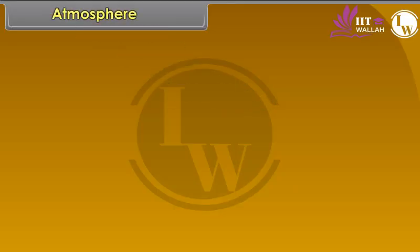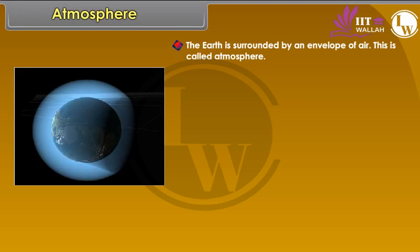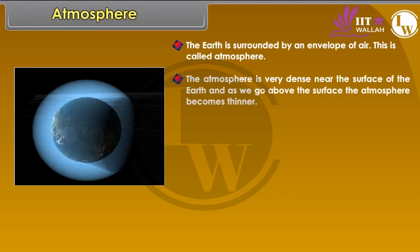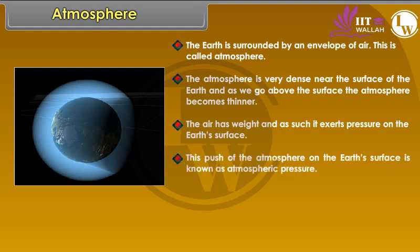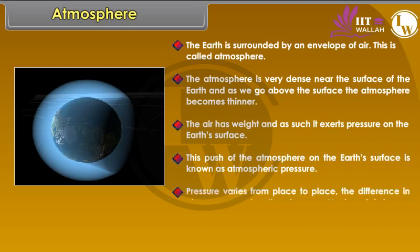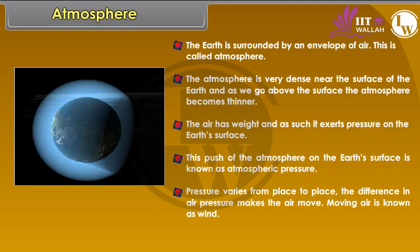The earth is surrounded by an envelope of air called the atmosphere. The atmosphere is very dense near the surface of the earth, and as we go above the surface, the atmosphere becomes thinner. The air has weight and exerts pressure on the earth's surface. This push of the atmosphere on the earth's surface is known as atmospheric pressure. Pressure varies from place to place, and the difference in air pressure makes the air move. Moving air is known as wind.